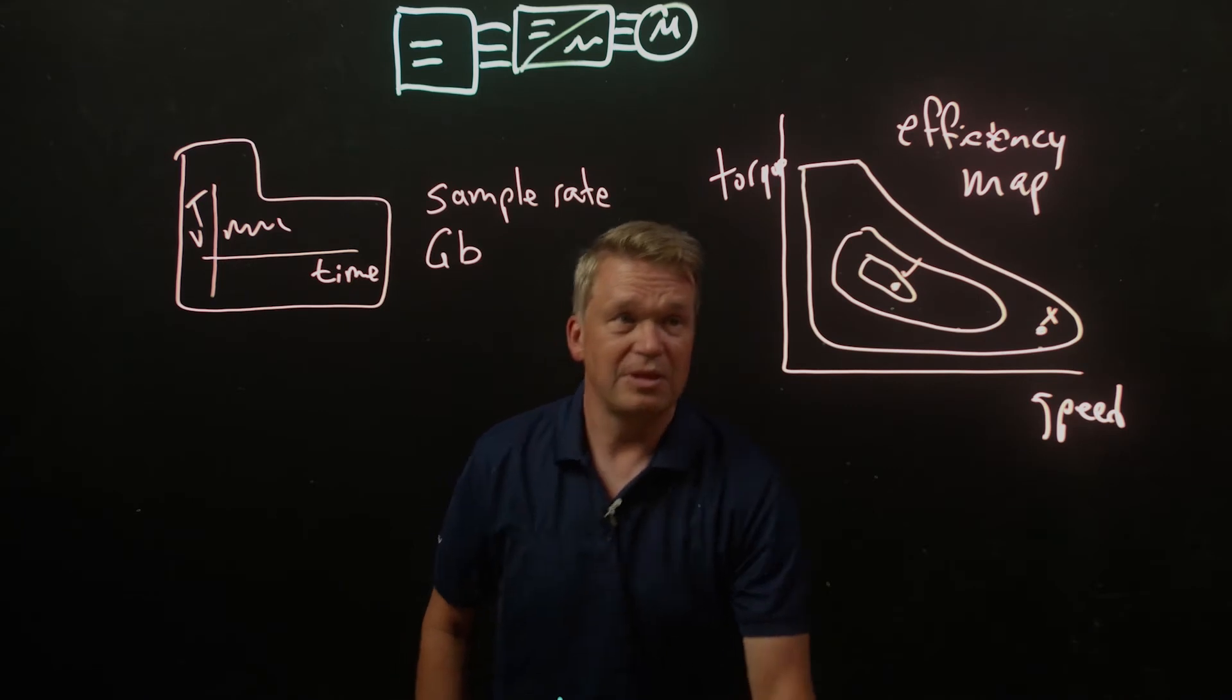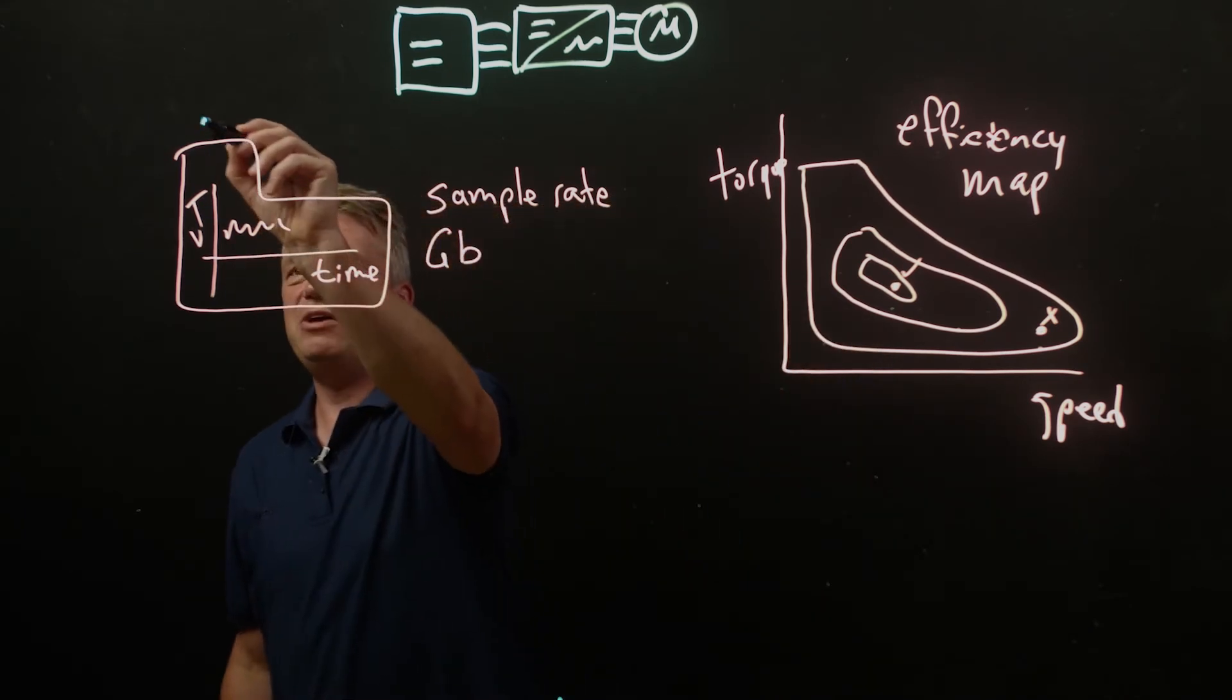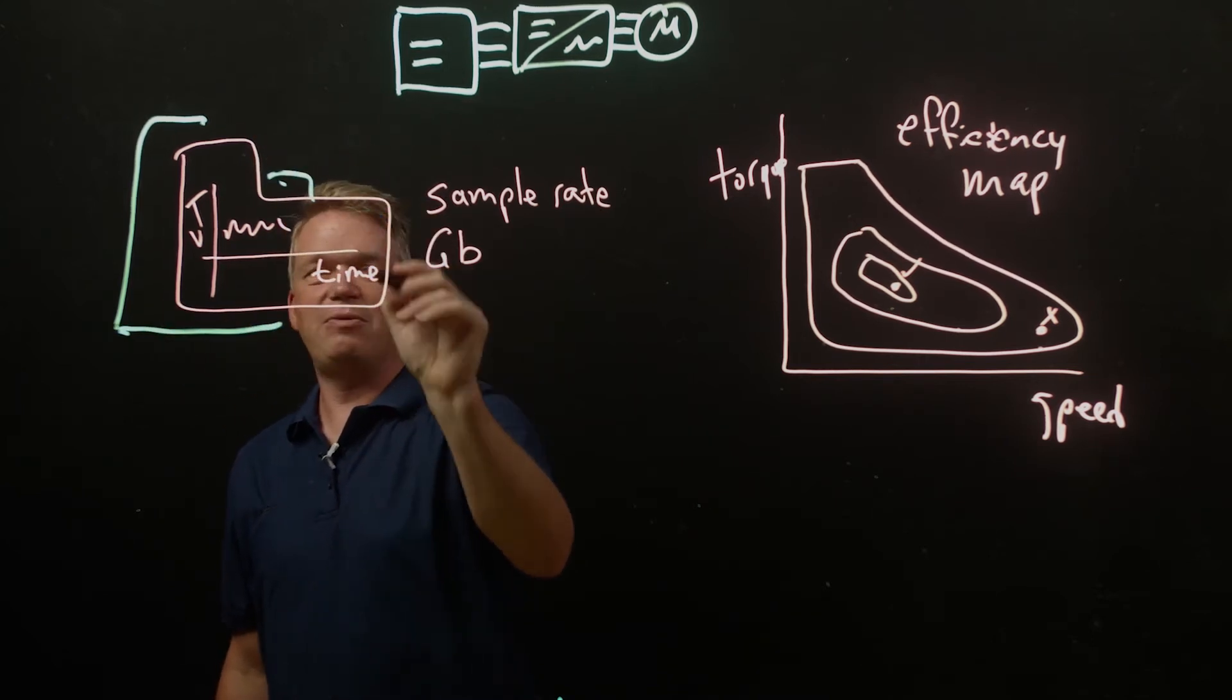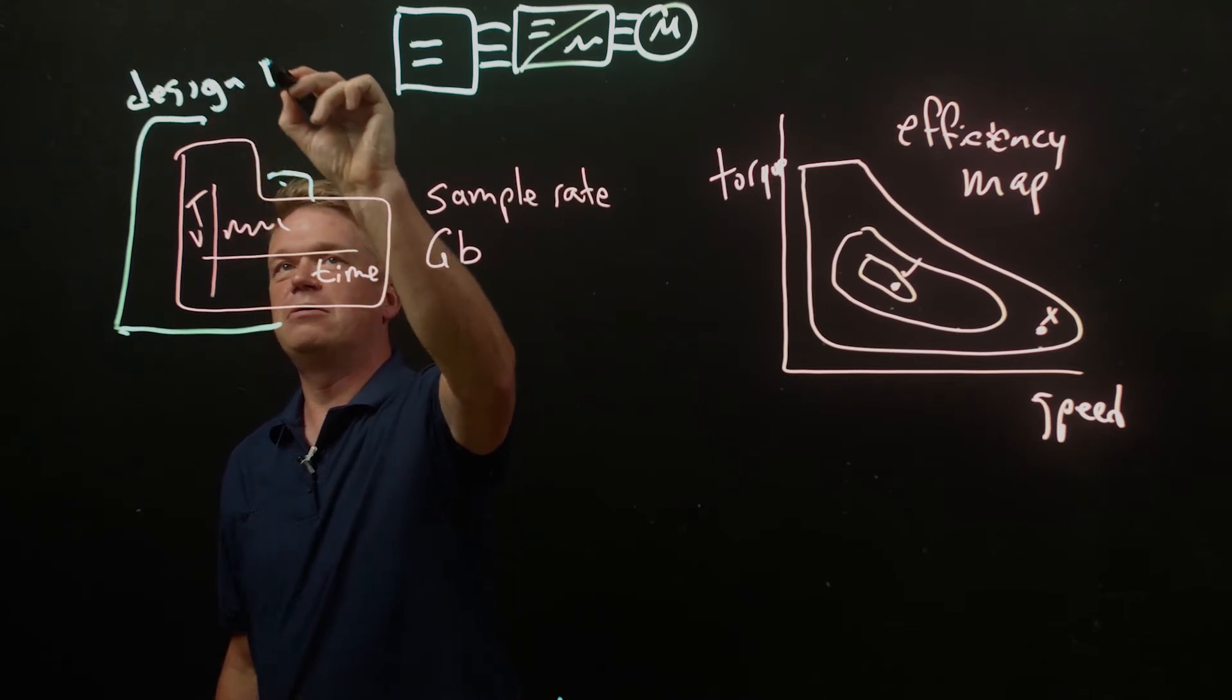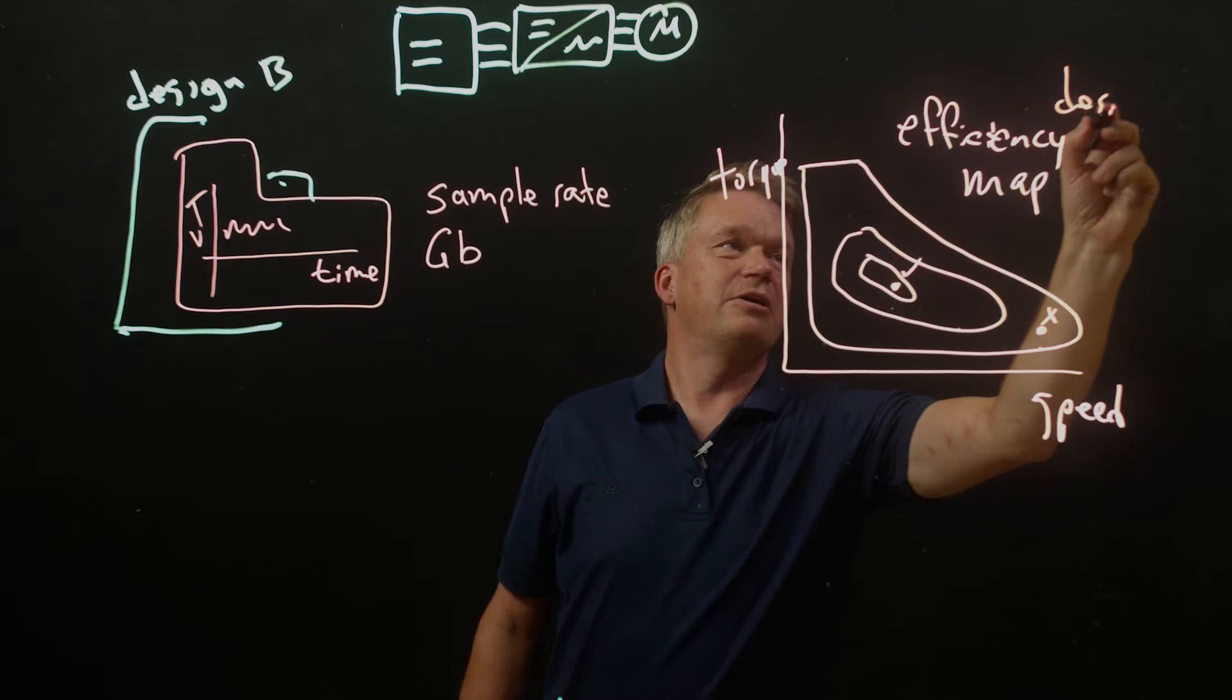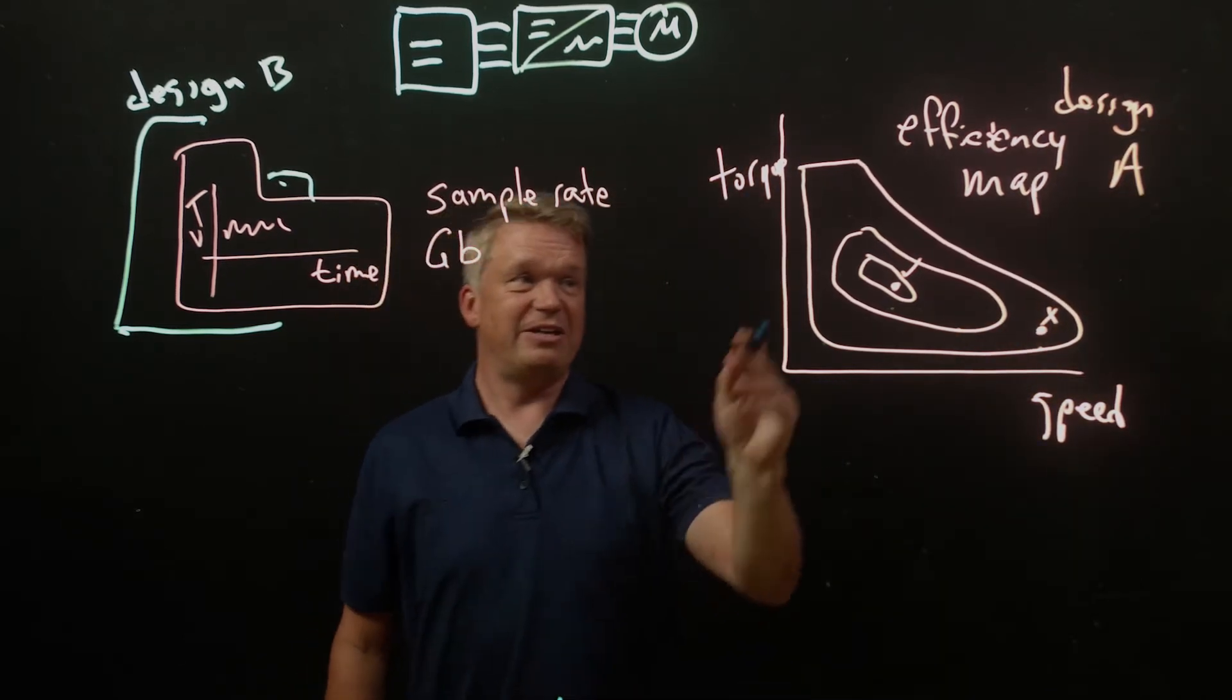Another thing to keep in mind here is that we've now quantified the efficiency of one design. The same thing will happen now for design B. Okay, so that was design A. Now let's look at design B. Design A. So in the same way that we quantified design's A efficiency, we can do the same thing for design B.